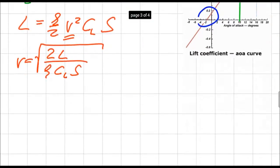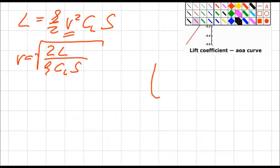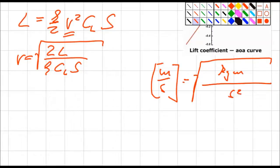Now I quickly look into my units of measurements. I want to have a speed. Speed would be meters over seconds. And on my right hand side I have L the force newton or kilogram meters over square seconds. I have ρ which is kilogram over volume cubic meters. C_L no dimension and S surface area is in meters square.